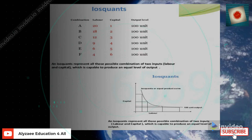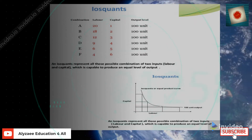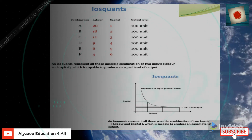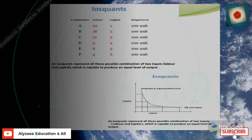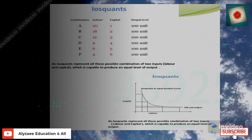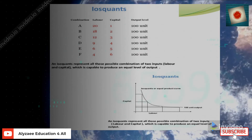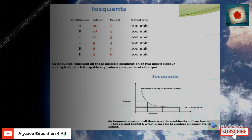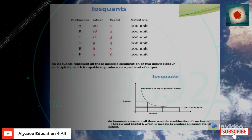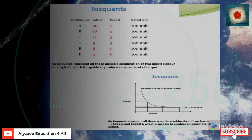An isocost represents all those possible combinations of two inputs — labor and capital — which are capable of producing an equal level of output. We will look at a table example with combinations A, B, C, D, and F.